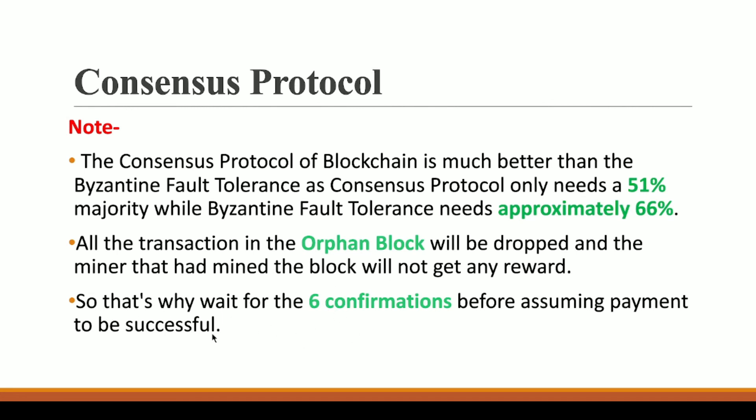For this type of situation, you may have heard that whenever you do a Bitcoin transaction you must wait for six block confirmations. The reason is this conflict scenario. If A transferred you some bitcoin and the block containing that transaction becomes an orphan block — discarded from the network — you would not receive the bitcoin. So you must wait for six block confirmations before considering a transaction complete. We'll discuss six block confirmation more in upcoming videos.